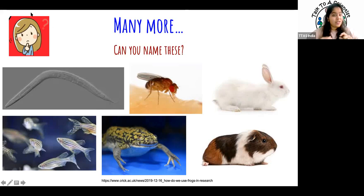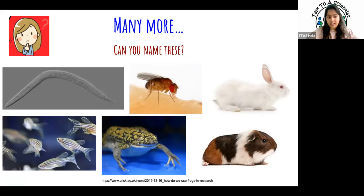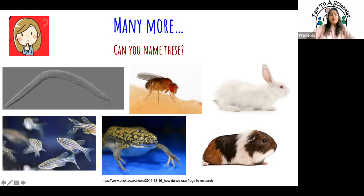What is amazing about C. elegans and why they're so useful in research is because they have a slightly transparent body — you can see inside the organism under a very powerful microscope. That makes them really useful for study, as well as the fact that they have a shorter lifespan, so you can study them right from when they're born to when they die.